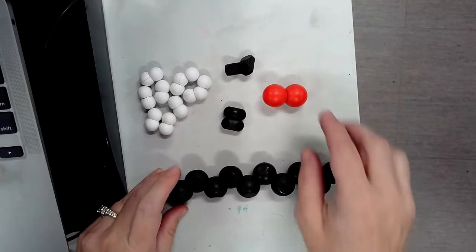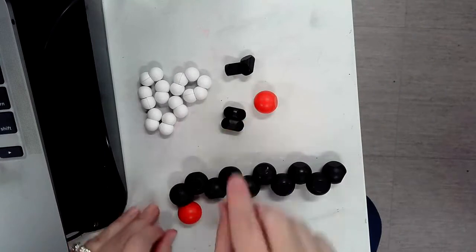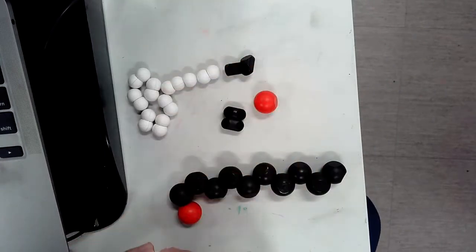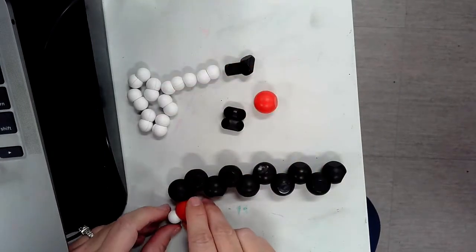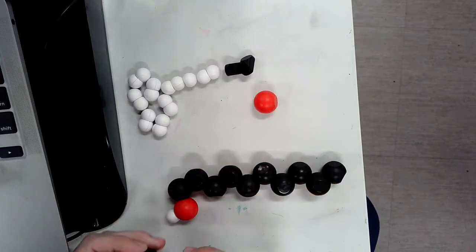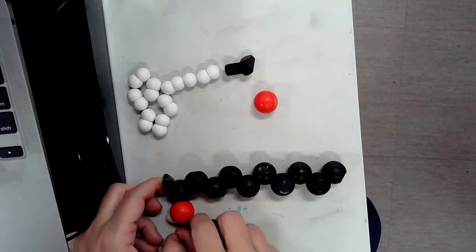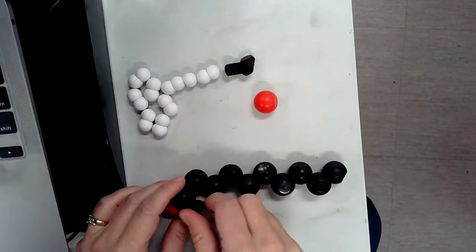Off of carbon number one, we are going to put a single oxygen and one hydrogen off of that oxygen. And then off of that same carbon number one, we're going to double bond an oxygen to the top of it. Go ahead and orient it in a way where you can create a double bond.